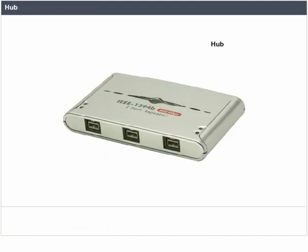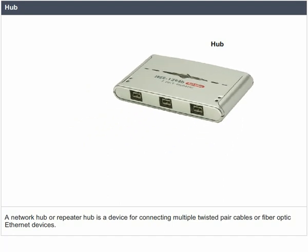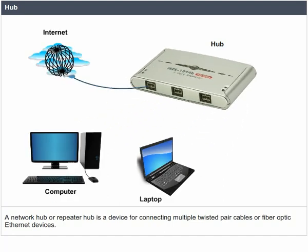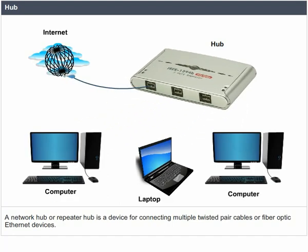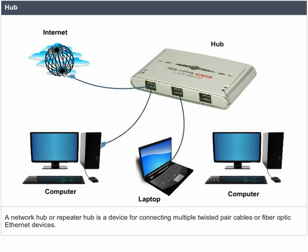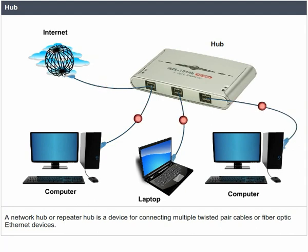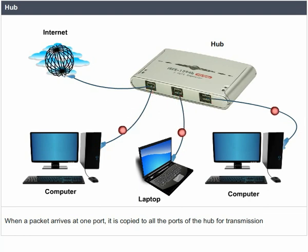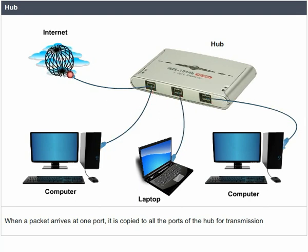Hub. A network hub or repeater hub is a device for connecting multiple twisted pair cables or fiber optic Ethernet devices. When a packet arrives at one port, it is copied to all the ports of the hub for transmission.